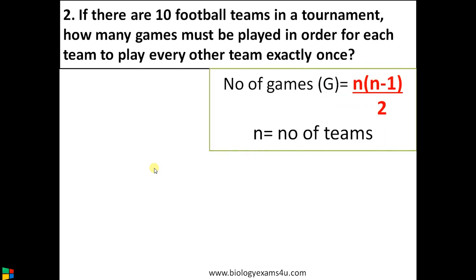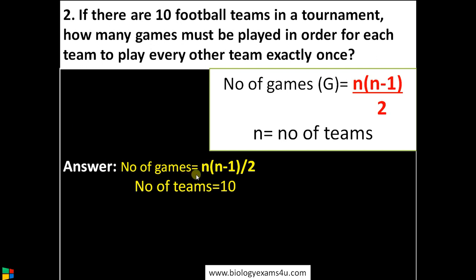Number of games G is equal to n into n minus 1 by 2, where n is the number of teams. So let's work out the problem. Number of games is equal to n into n minus 1 by 2.